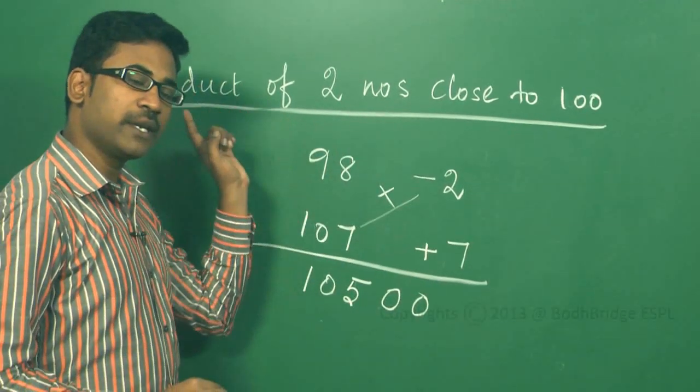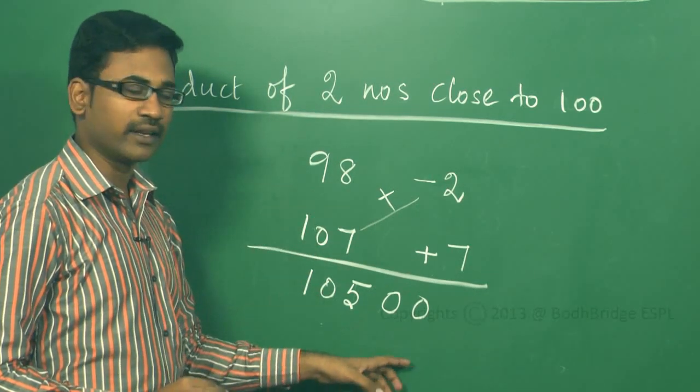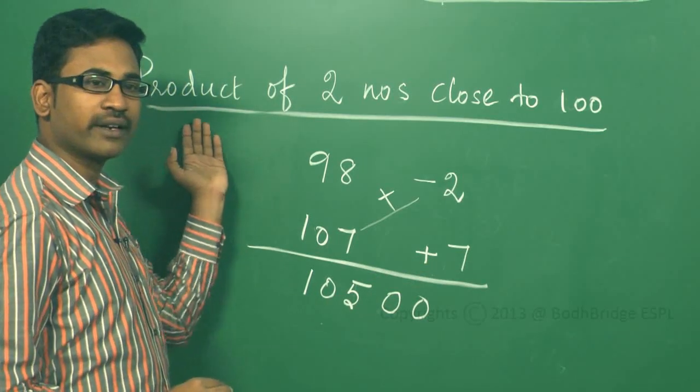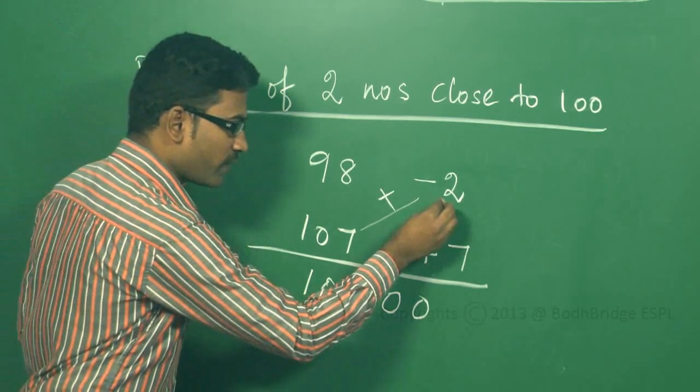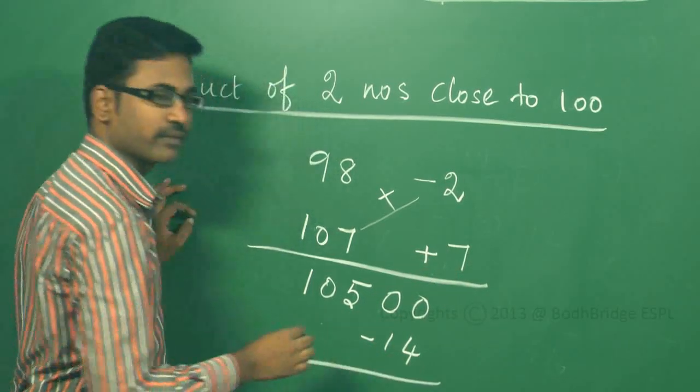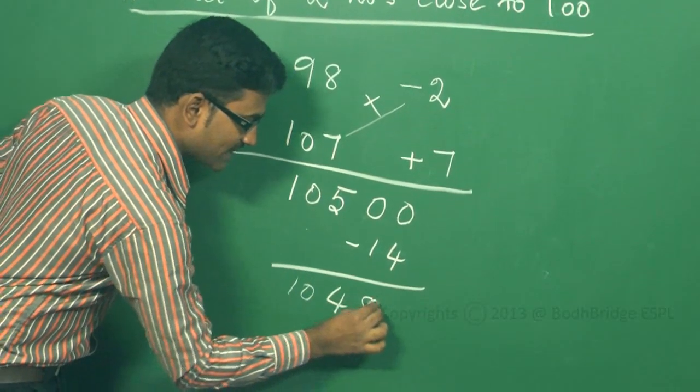The last thing, whereas in the previous square when we were finding, we squared the difference and we added at the end. Here we have to make the product at the end because we are finding product here. In previous cases we were finding squares. So product of minus 2 and plus 7 will be minus 14. So subtracting this, 10486 will be the answer.